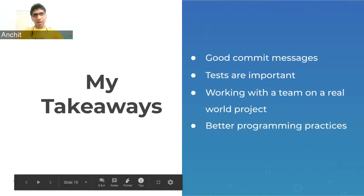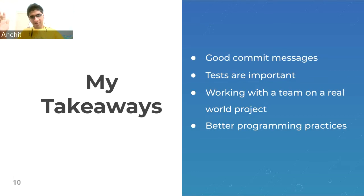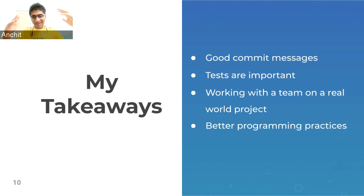My takeaways: I learned the importance of good commit messages — Hunar constantly reminded me, and now I make good commit messages with proper grammar, no punctuation at the end, and written in the imperative: 'Add this feature,' 'Update this,' 'Modify this,' rather than describing what the project does. I also learned the importance of writing tests — Thomas constantly asked me to make tests in every pull request. I worked with the Packit team and they were great. I learned a lot, including good programming practices.